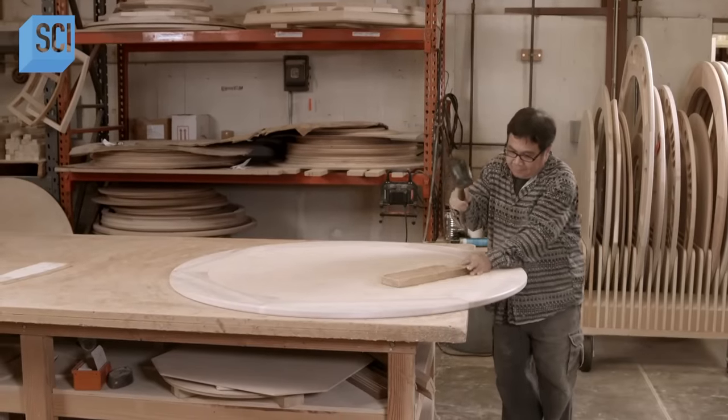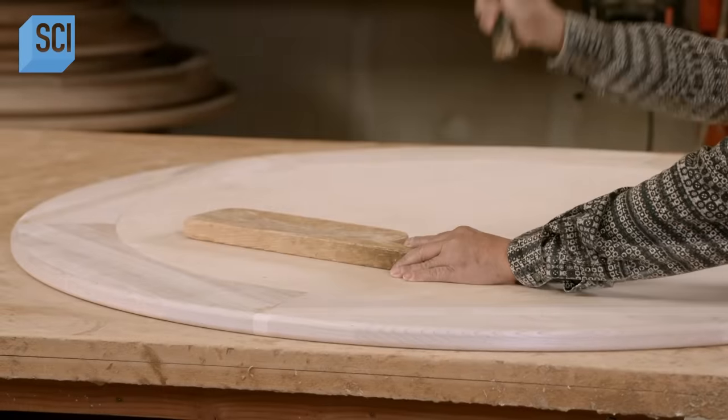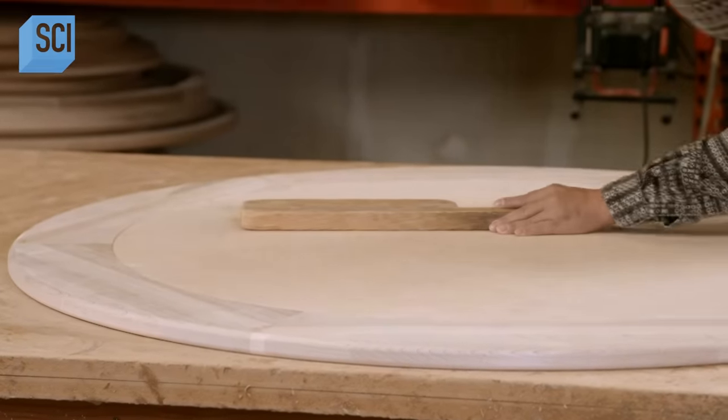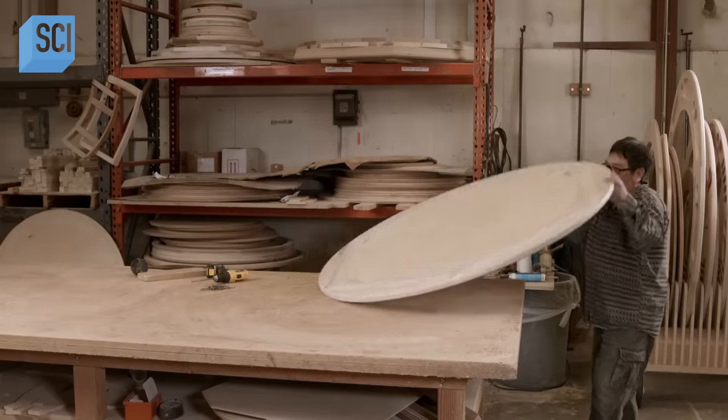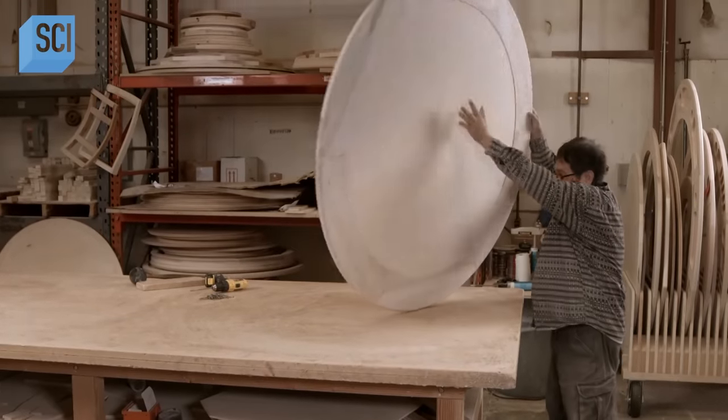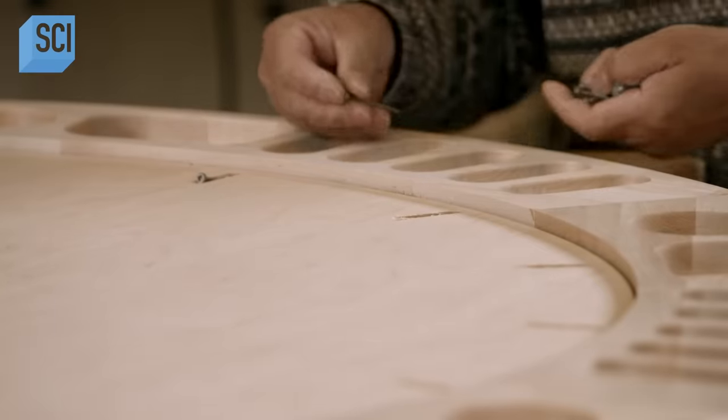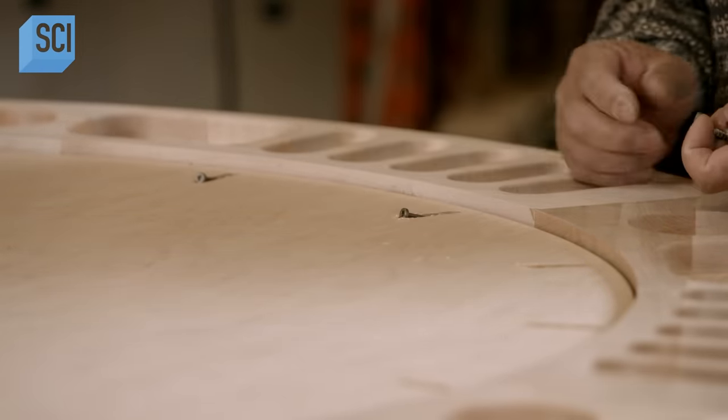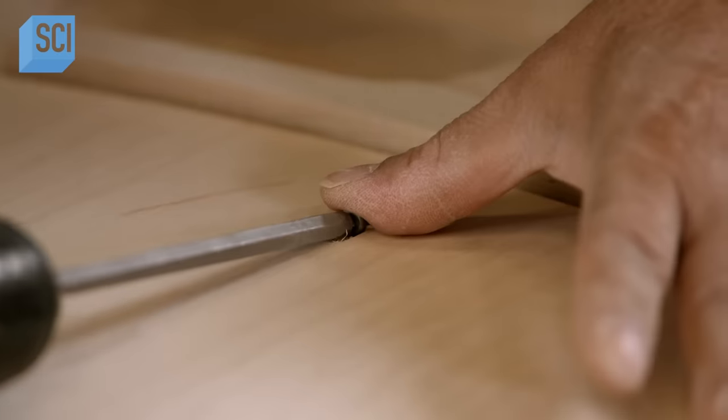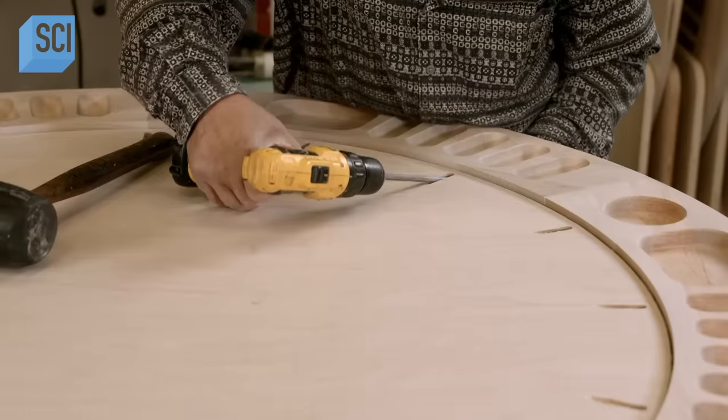Using a rubber mallet, he taps the tabletop to entrench it more firmly in the groove. He flips the tabletop back to the game side and installs 16 screws on an angle to tighten the top to the rim. The screws serve as a clamp system to hold the table center in place as the glue cures.